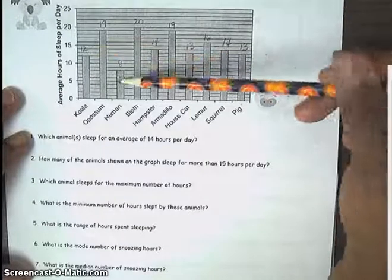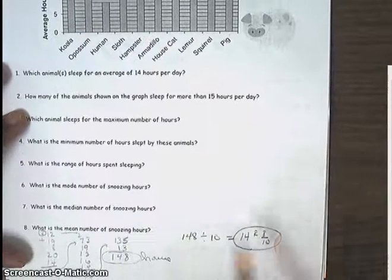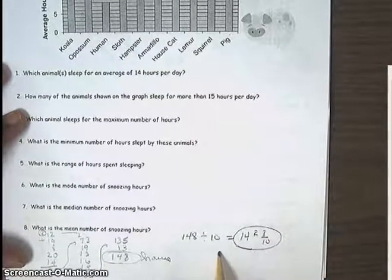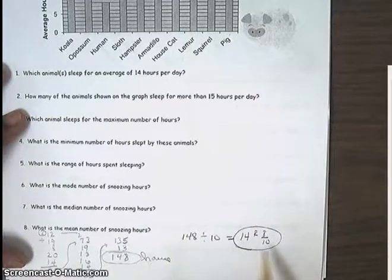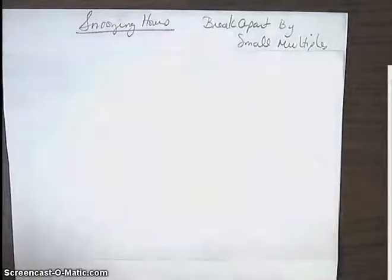And so in this case, we have 1, 2, 3, 4, 5, 6, 7, 8, 9, 10. And so that is how I have 148 divided by 10. So I have my answer here, but I want us to figure out how did we come up with this answer.